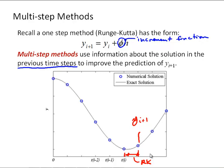A multi-step method is going to recognize that we could look back and say, if we know i-2, we know the slope there, and we know the slope at i-1, and we can calculate the slope at i — can we use this information from all three of these points to improve our prediction of i+1? In other words, using some information about how the slope of the solution has been changing for the last couple of time steps to help predict the next step. And we'll look at the Adams method approaches for doing this.